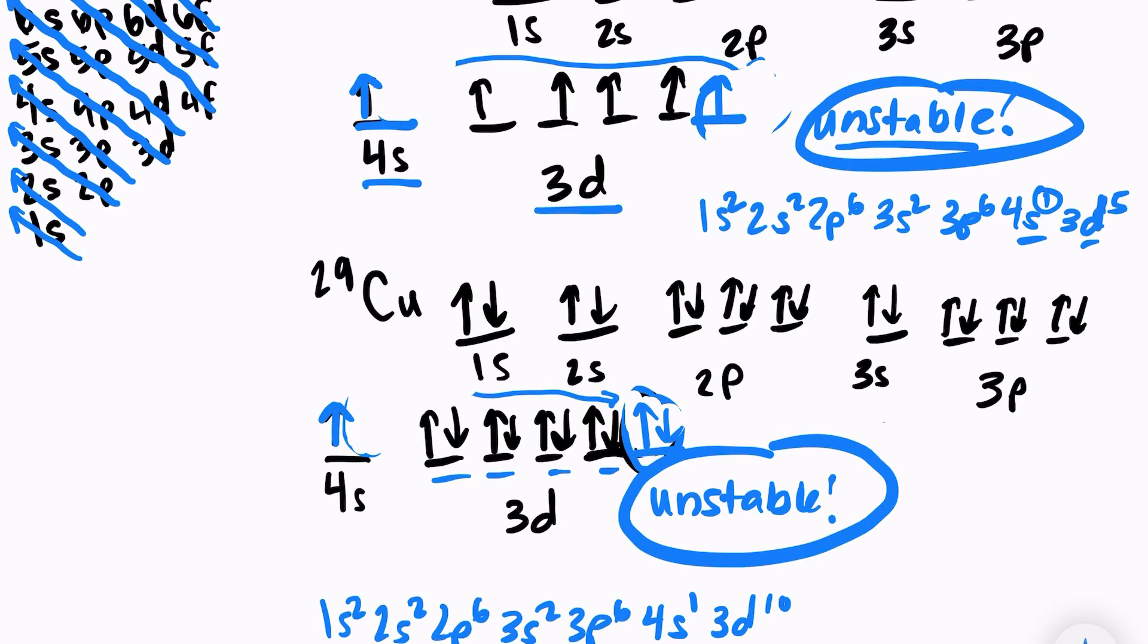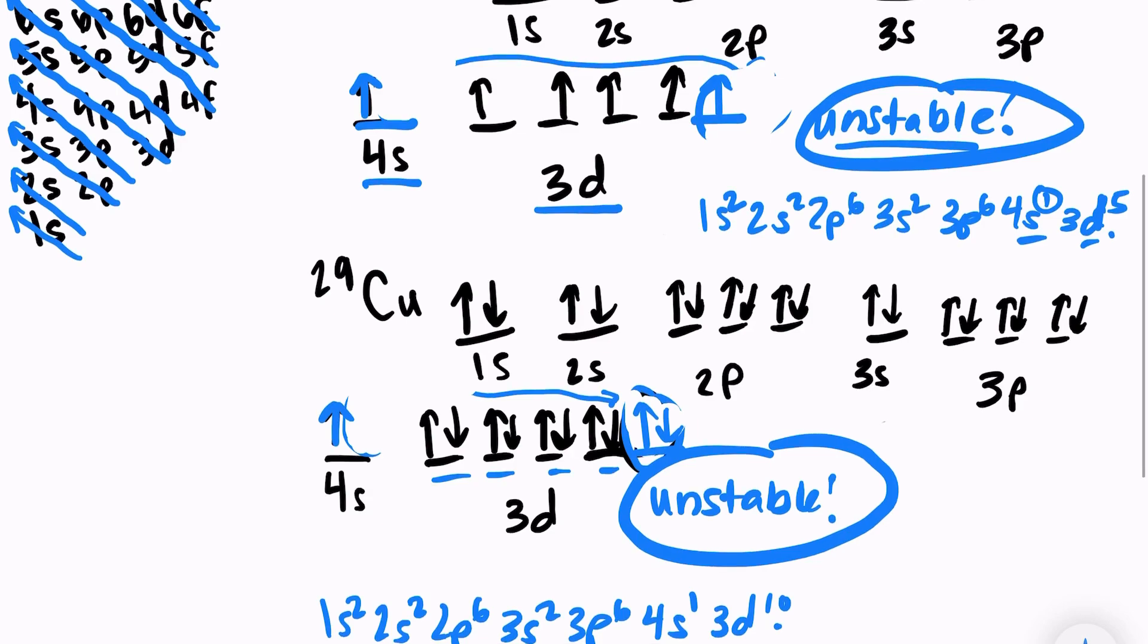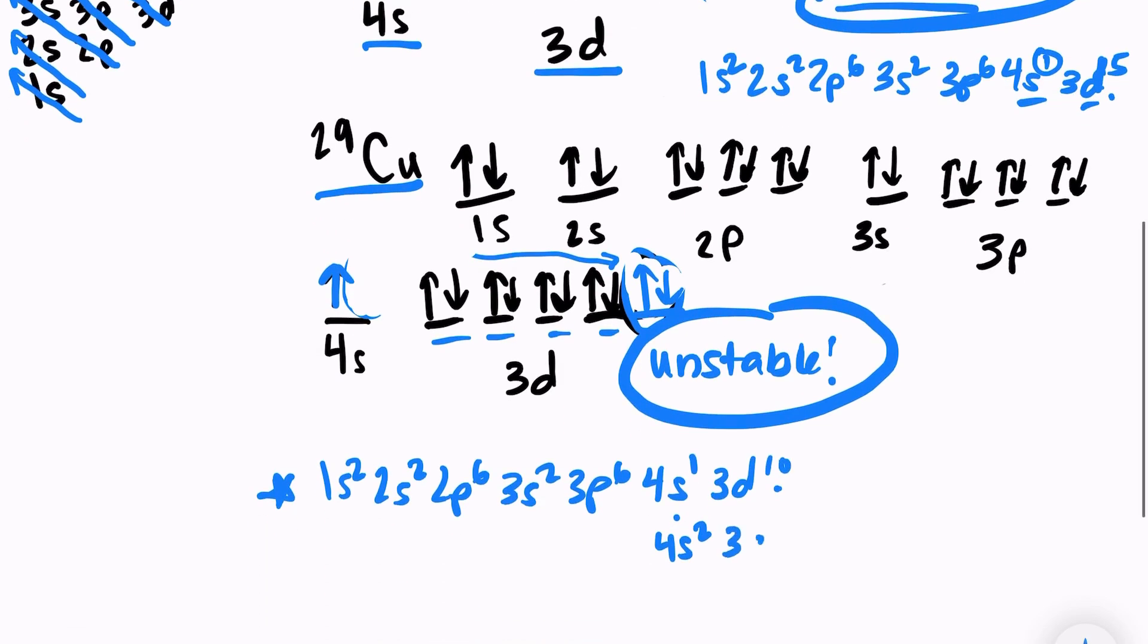We're not going to have a 3d4 or a 3d9 because that is highly unstable. So we are going to take one electron from 4s and move it into the 3d sublevel. And these are exceptions that you are expected to know. So if you were ever asked to write the electron configuration for copper, this is what you need to write. If you were to write 4s2, 3d9, that would be counted incorrect because that is an unstable electron configuration.